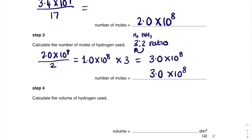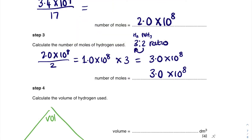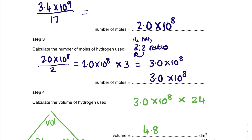Then we calculate the volume of hydrogen used. For that we need a different magic triangle — the volume–moles–24 triangle. We know the number of moles and we know that the molar volume of one mole of gas is 24 dm³, so we can work out the volume. We do 3.0×10⁸ times 24, which gives us 4.8×10⁹ dm³. Don't write all the zeros because you're liable to get an order of magnitude wrong. Hope that was helpful in explaining how we answered that exam question.